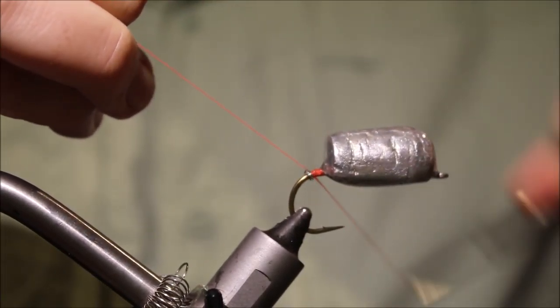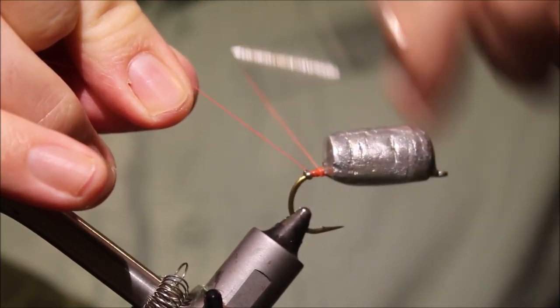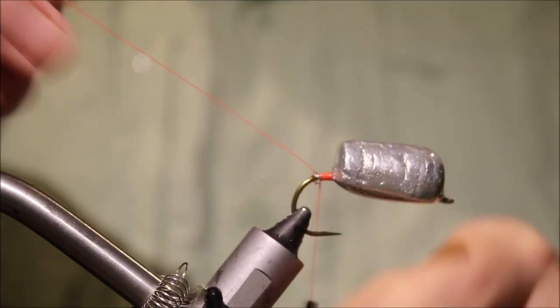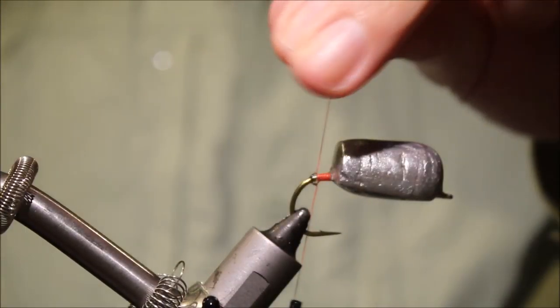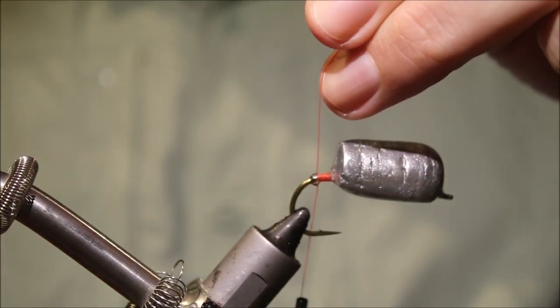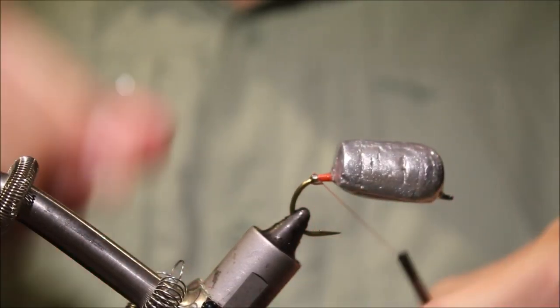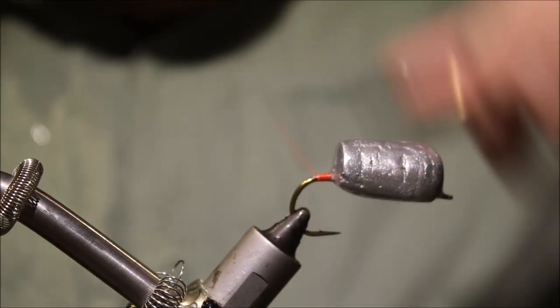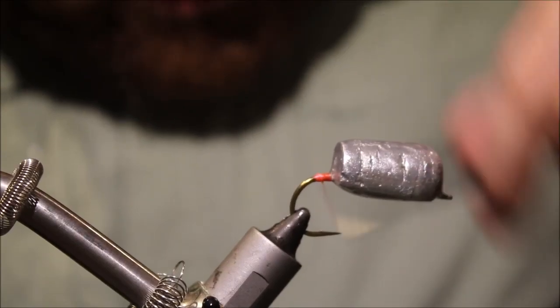I'll come back, just around the bend a wee bit. And trim away my thread, just wipe away any excess glue there, and I'll build a wee bump.